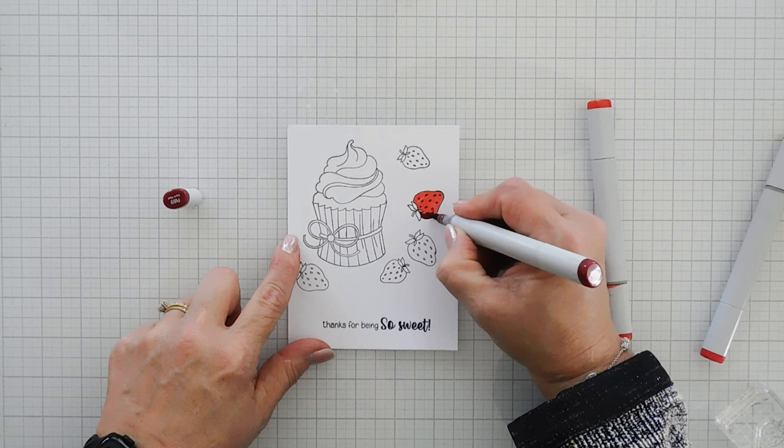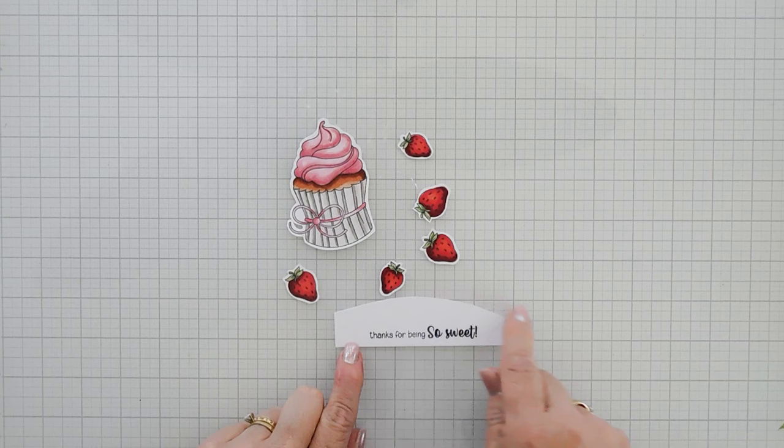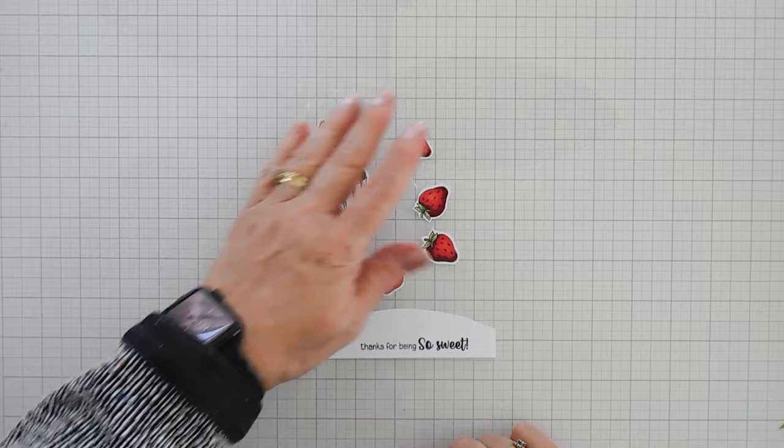So I have my cupcake, and I also have my strawberries, and then I did trim the bottom off of my greeting, kind of straightened it out because I did stamp it a little crooked, and then I domed the top, just free-handed it with my scissors. So those are our sweet elements. We're going to put these to the side, and now we're going to do some stenciling.